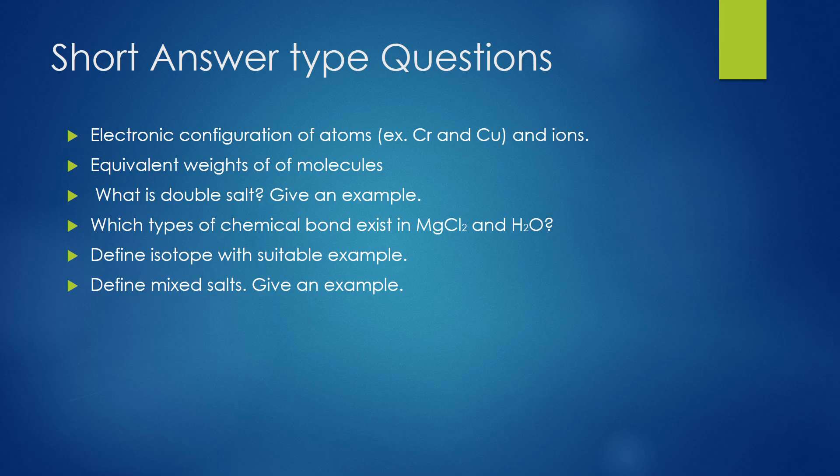Most probably it can ask a particular type of salt, or it may ask: define salt and how many types of salts are there — explain with examples. So be prepared accordingly. Next, which type of chemical bonds exist in magnesium fluoride and water? Define isotope, isobar, and isotone with examples. Next, define mixed salt and give an example.